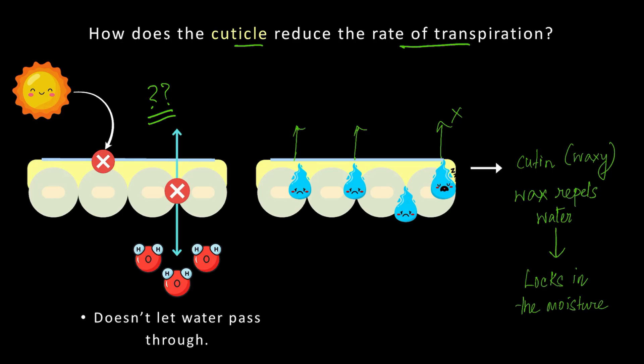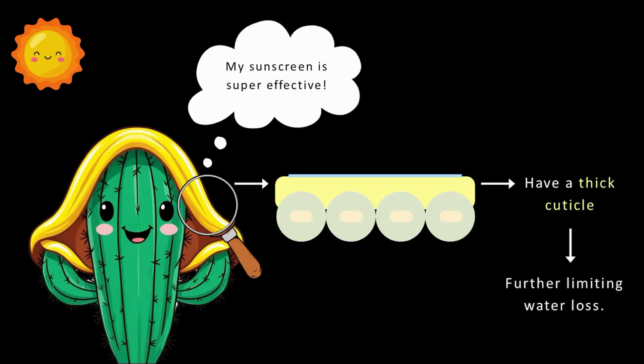In desert plants, where water is precious, the cuticle is extra thick because the thicker the cuticle, the lower the rate of transpiration.